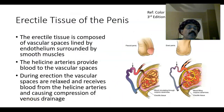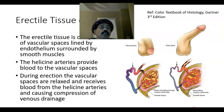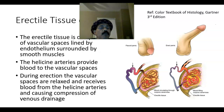The erectile tissue receives blood flow by means of the helicine arteries, which are branches of the central artery of the penis. There is also arteriovenous anastomosis. During the flaccid stage, space is minimum and helicine arteries are constricted. During erection, due to parasympathetic stimulation, more blood flows into the cavernous spaces. The artery wall becomes relaxed, and the muscular trabeculae become relaxed — this parasympathetic stimulation causes erection of the penis.